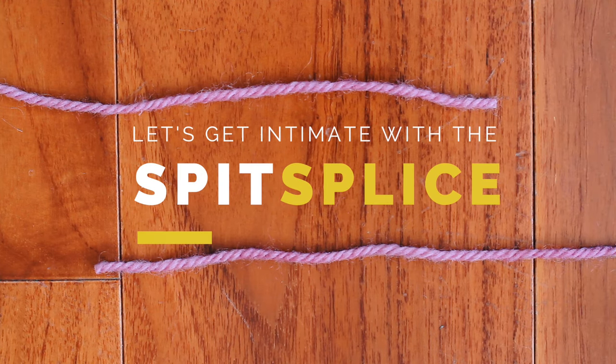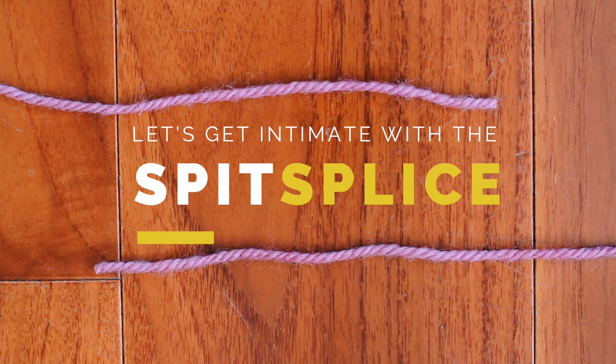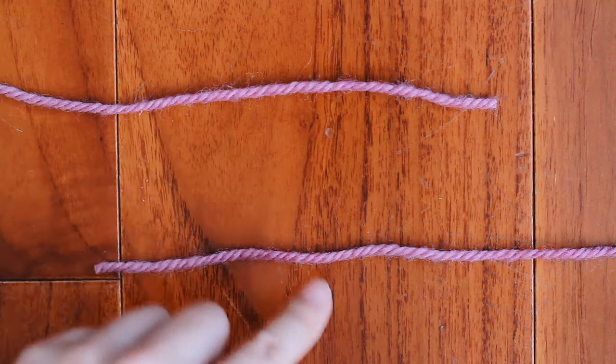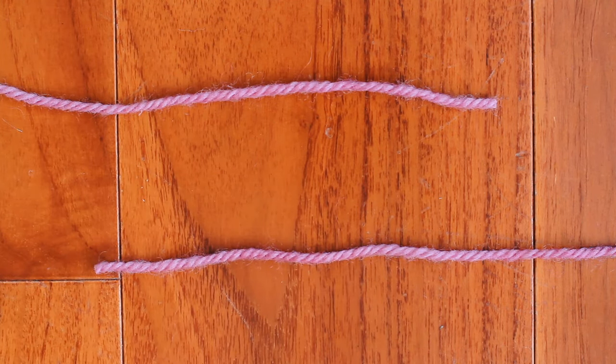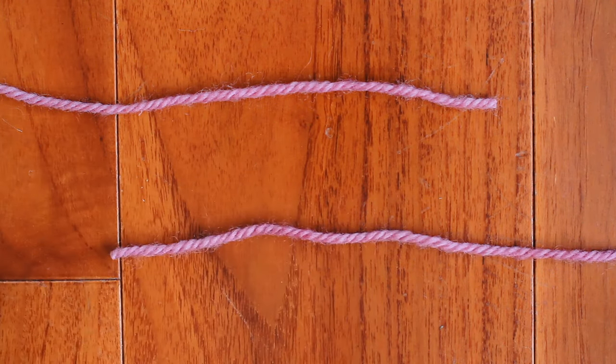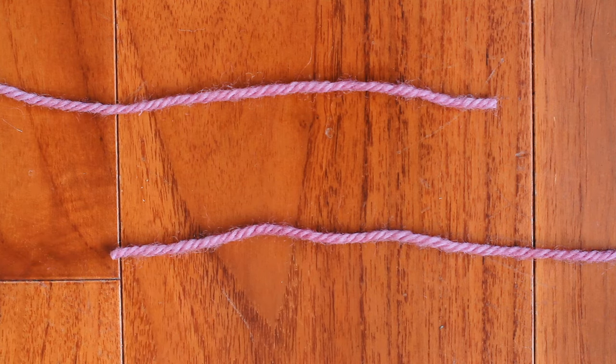Now the next joining method is called the spit splice. And that's because we literally use our spit to join these two yarns together. And no, I'm not joking. Not a joke. These two strands of yarn will literally be in my mouth in a few minutes.